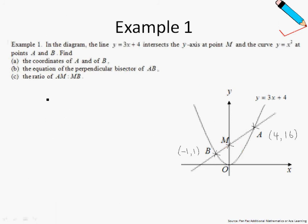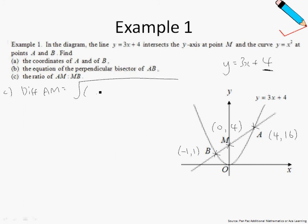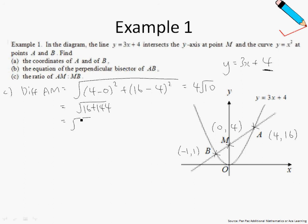Moving on to part C, we want the ratio of AM to MB. First, let us identify the coordinates of point M. Point M lies on the y-axis, which is the y-intercept of the line y equals 3x plus 4. So the coordinates of M are (0, 4). To find the ratio, we find the distance AM using the distance formula: x-coordinate of A minus x-coordinate of M squared, plus y-coordinate of A minus y-coordinate of M squared. Simplifying, the distance AM is 4 root 10, or you can leave it as square root of 160.